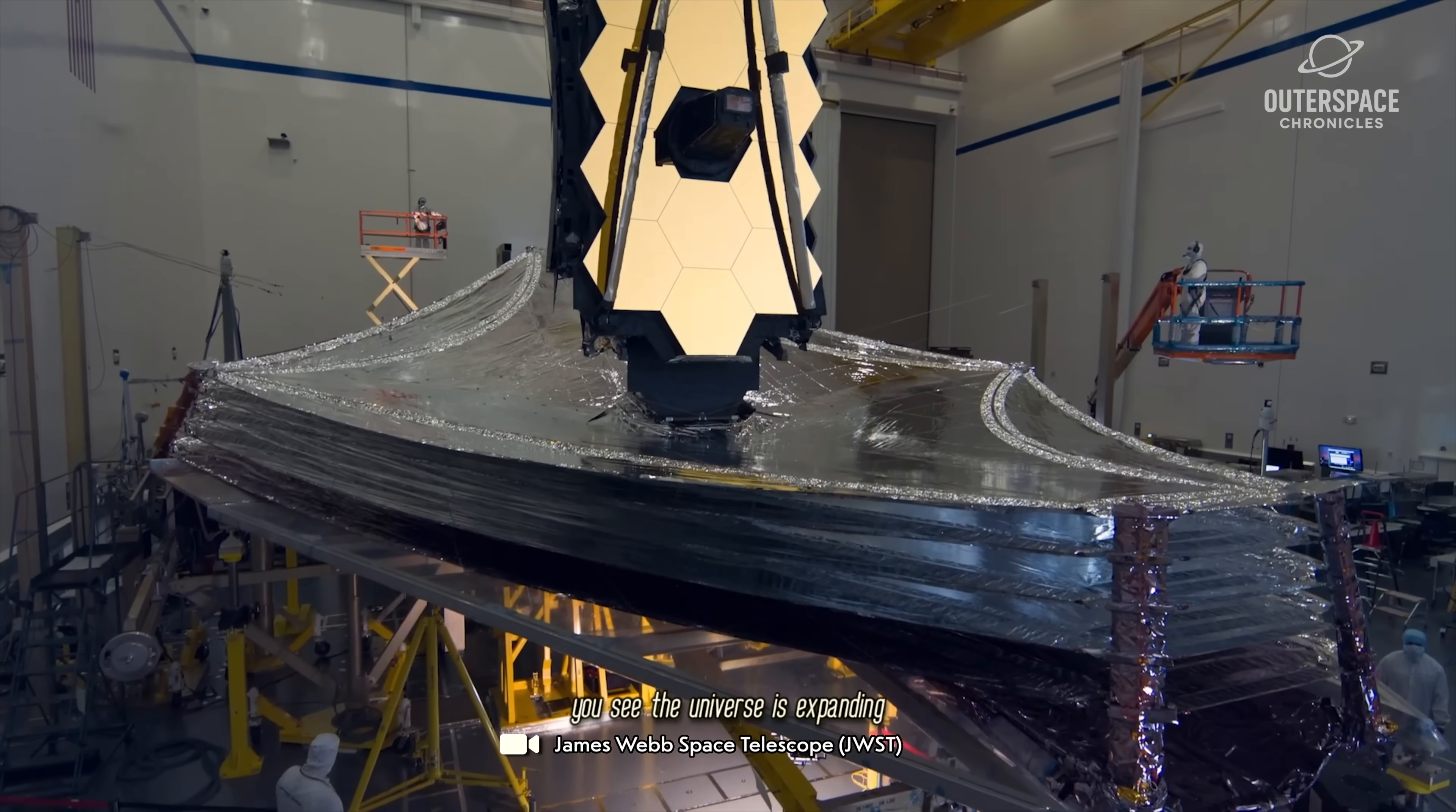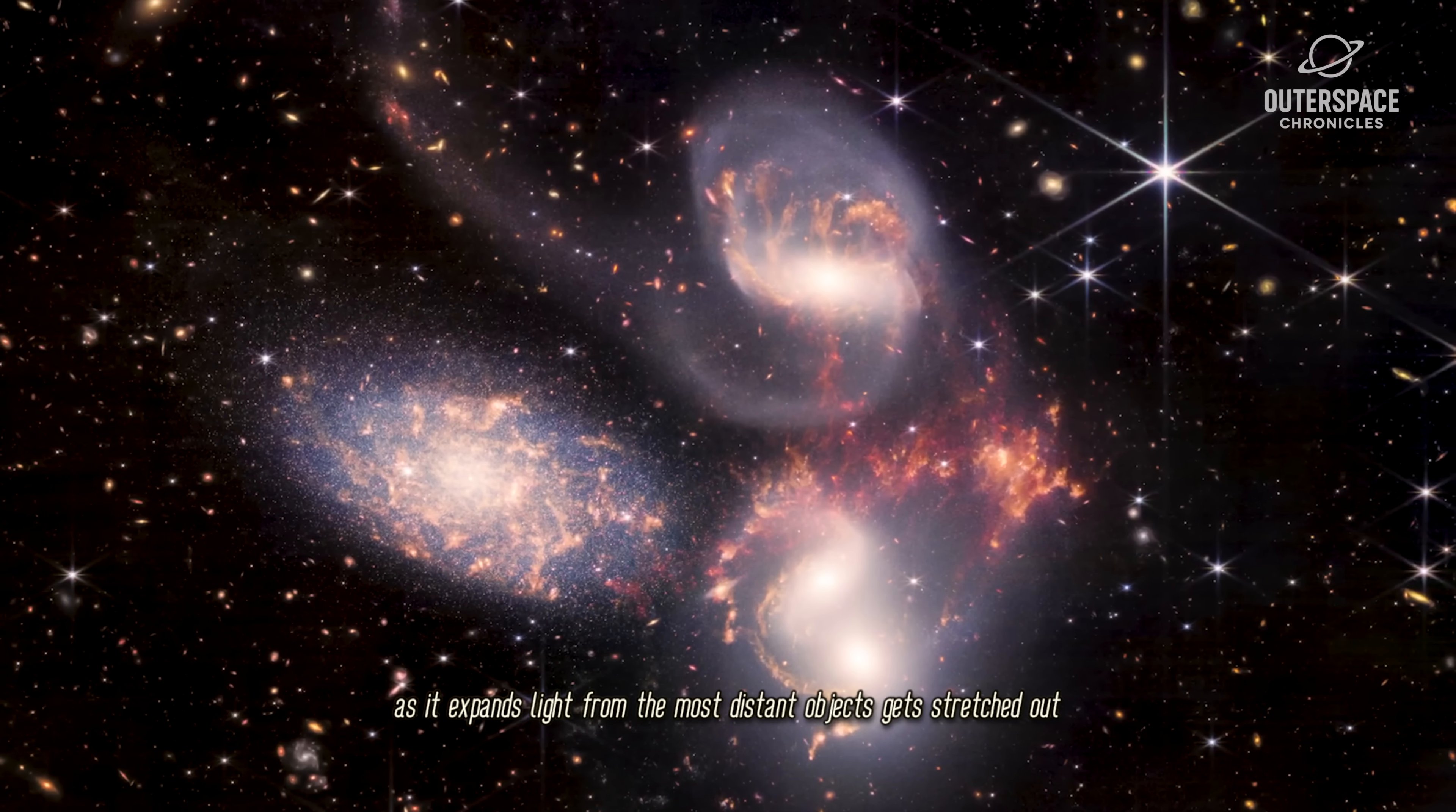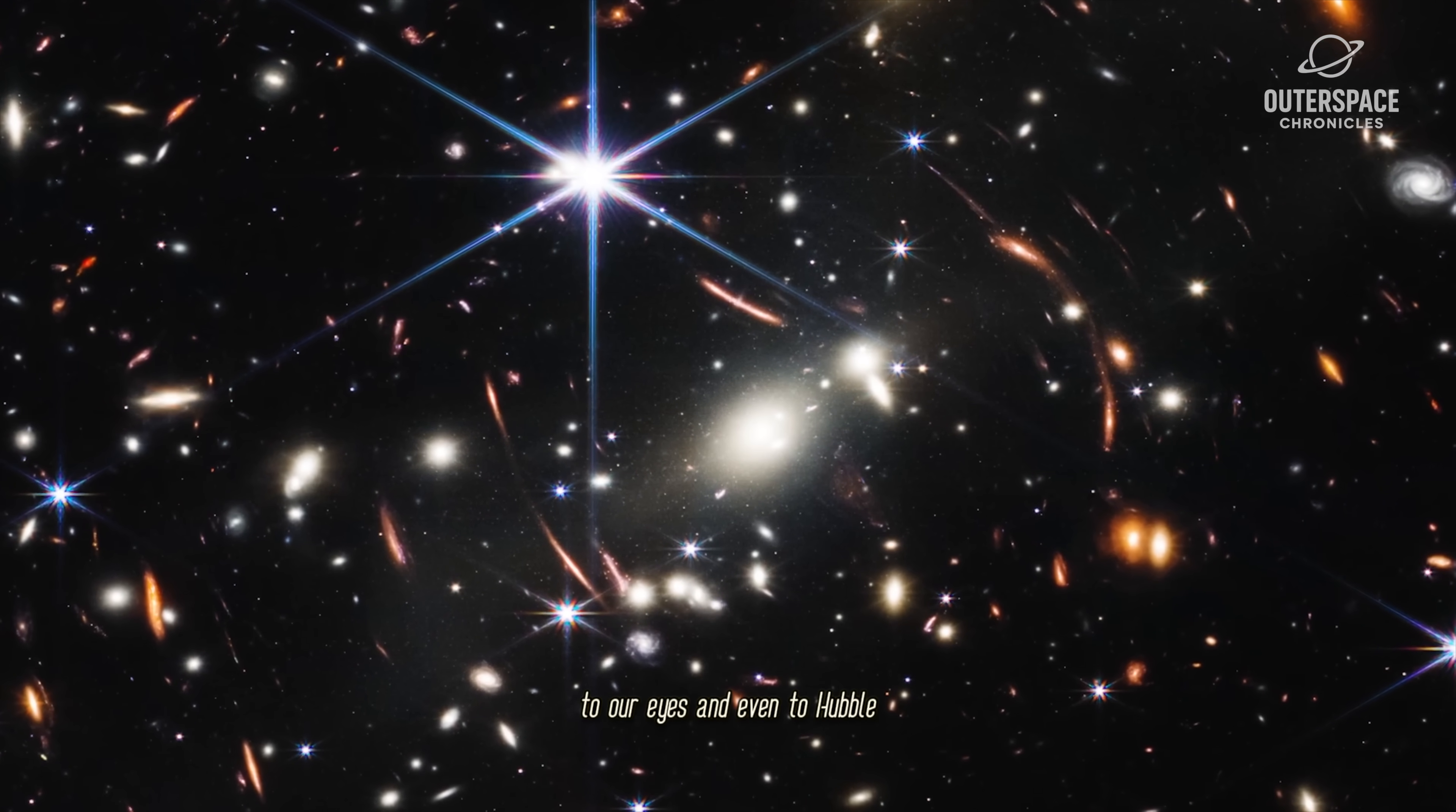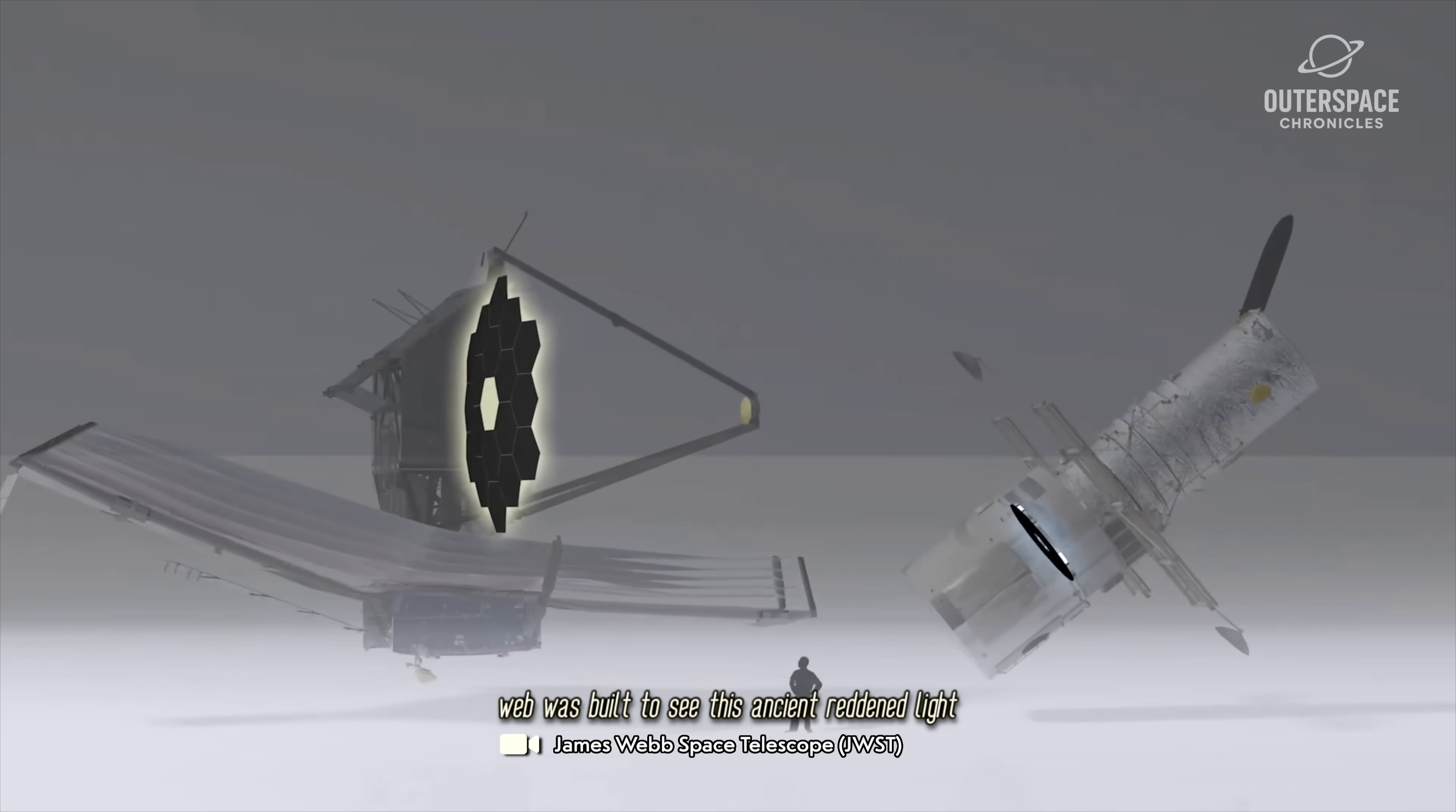You see, the universe is expanding. As it expands, light from the most distant objects gets stretched out. Visible light from the very first stars has been stretched all the way into the infrared spectrum by the time it reaches us. To our eyes, and even to Hubble, this light is invisible. Webb was built to see this ancient, reddened light.